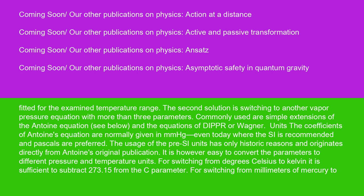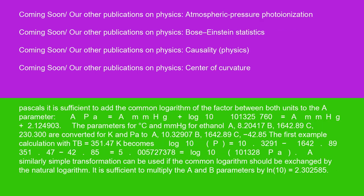For switching from millimeters of mercury to Pascals, it is sufficient to add the common logarithm of the factor between both units to the A parameter. A_PA equals A_mmHg plus log 10(101325/760) equals A_mmHg plus 2.124903.